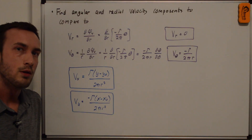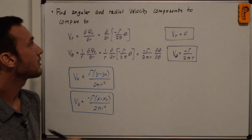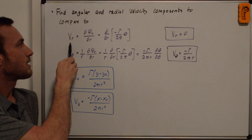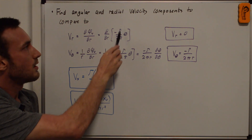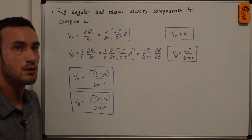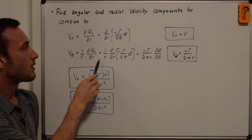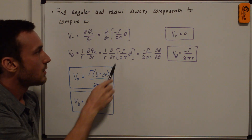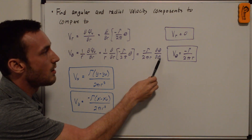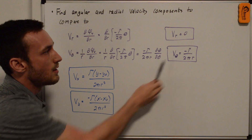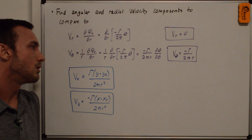We can also compute the radial and angular velocity components to compare with the code. For the radial velocity, we take d(phi_v)/dr. Since nothing in the velocity potential is a function of r, the radial velocity component is zero. For the angular velocity component, the derivative is (1/r) times d(phi_v)/d(theta). Taking out gamma and 2 pi, we get negative gamma over 2 pi r times d(theta)/d(theta), which is 1. So v_theta equals negative gamma over 2 pi r. The vx and vy components we just computed are also summarized here.